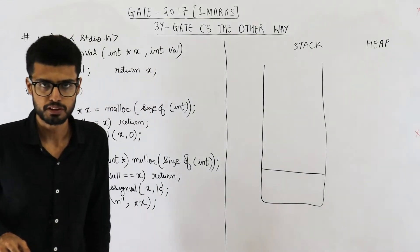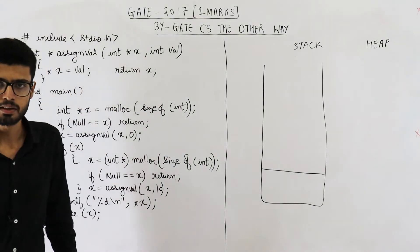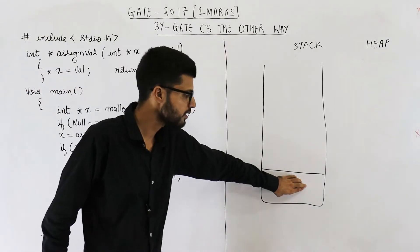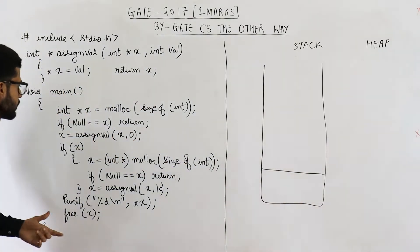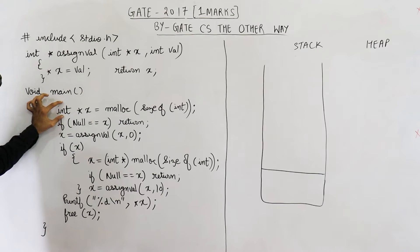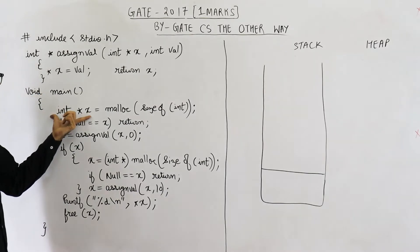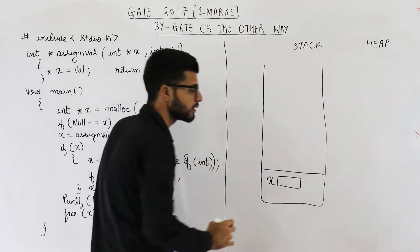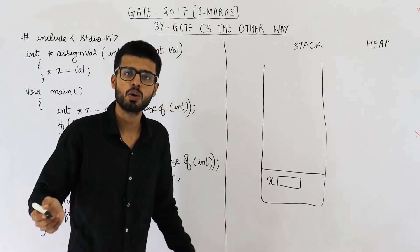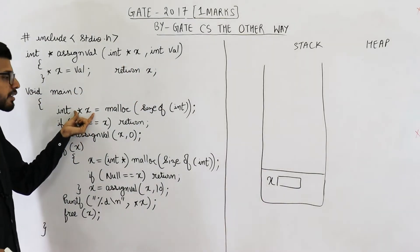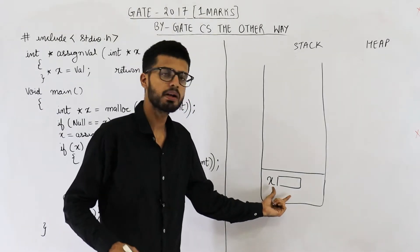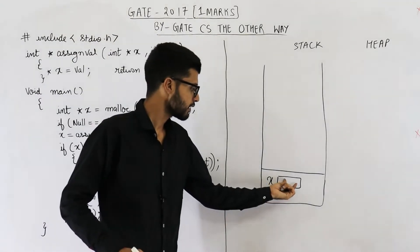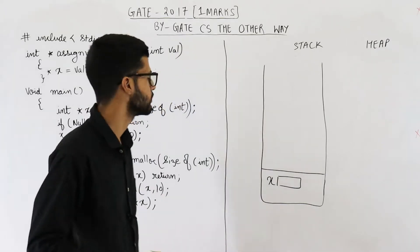Execution has to begin from the main function, which means this function will be called automatically. Whenever a function is called, you have to push an activation record onto the stack. Suppose this is the activation record corresponding to the main function. Now the first line is 'int *x', meaning you are declaring a variable named x which is local to the main function. All local variables get memory inside the activation record of that function. Since it's a pointer, x can contain only addresses.